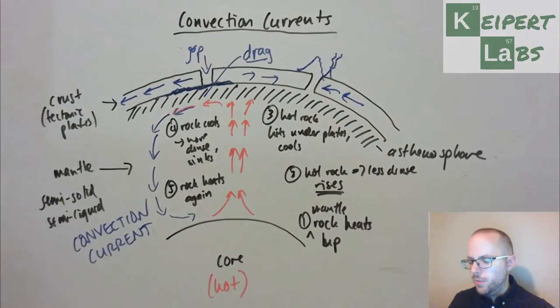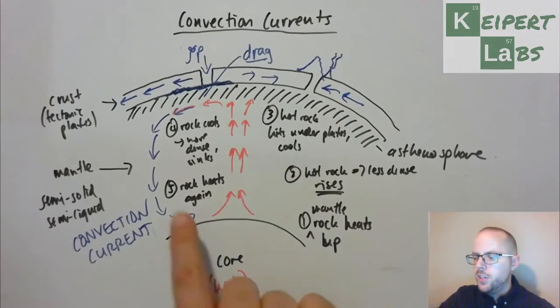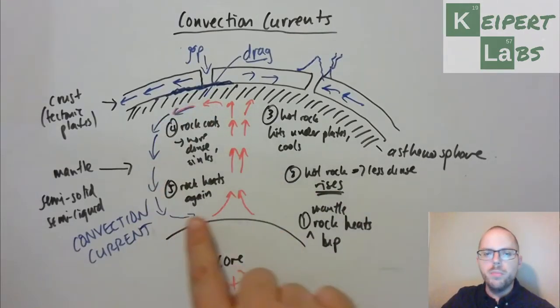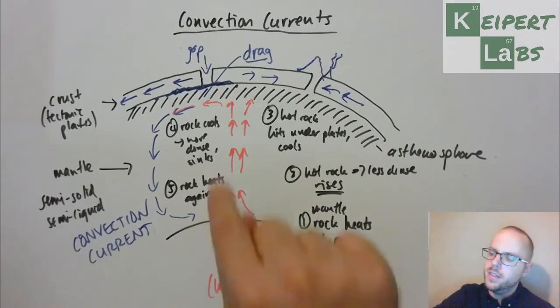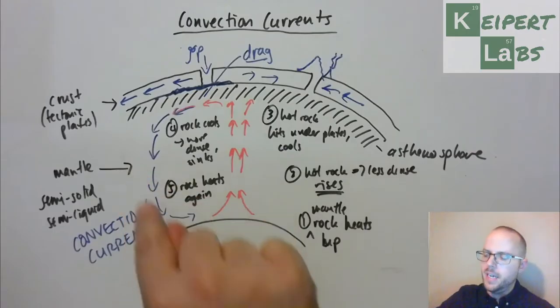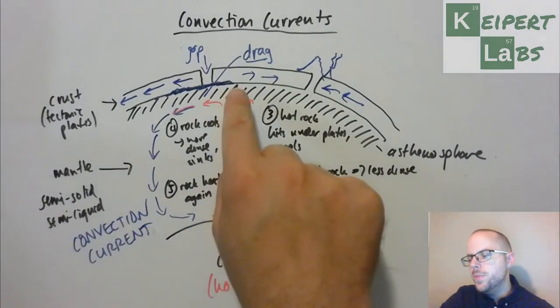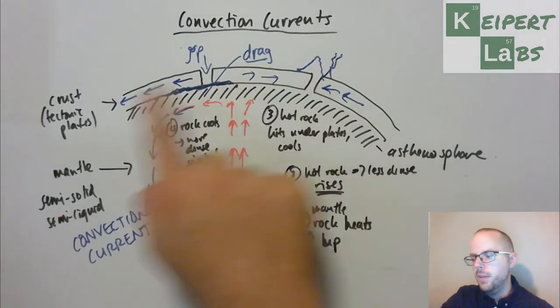So just to recap quickly, this idea of the convection current is the way that this mantle rock moves through the mantle because it heats up at the bottom, rises, cools, and then sinks back down again. The reason that it causes movement at the top level...